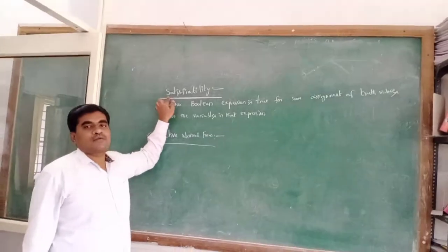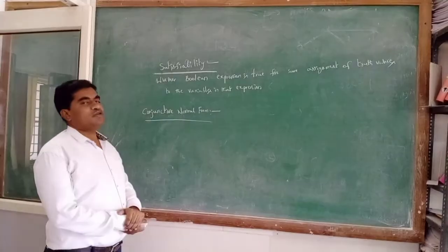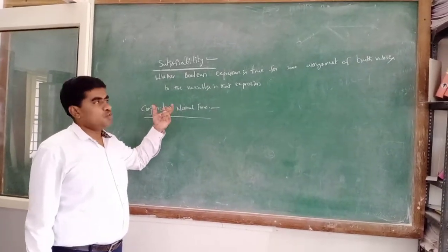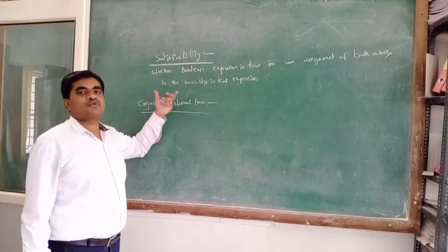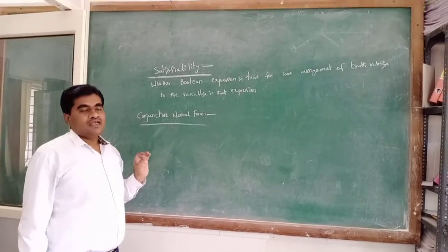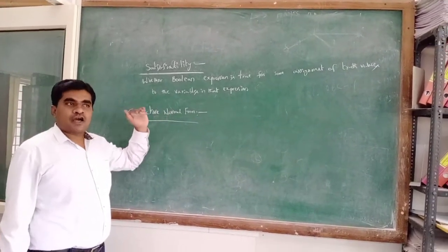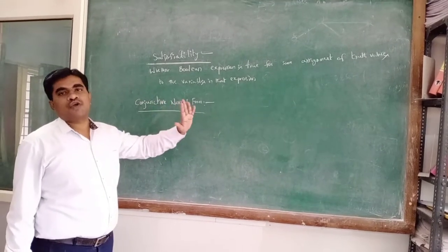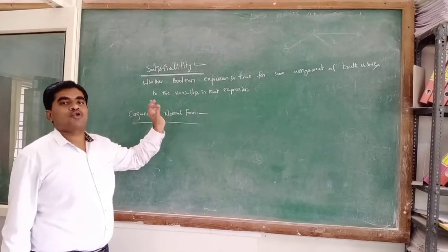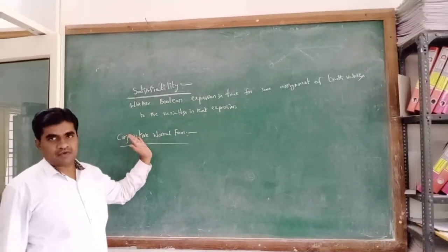Today we will discuss about satisfiability. Satisfiability means whether a given boolean expression is true for some assignment of truth values to the variables. If you apply 1s and 0s to the given expression and the output is 1, then we can say that it is satisfiable.